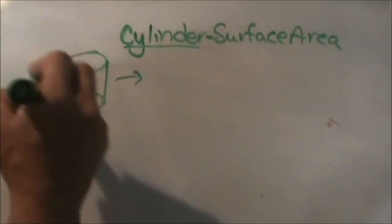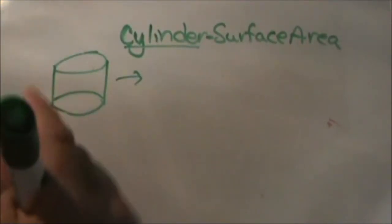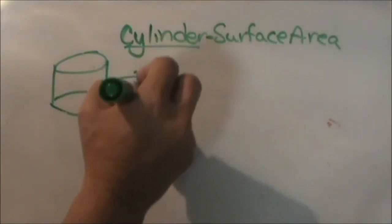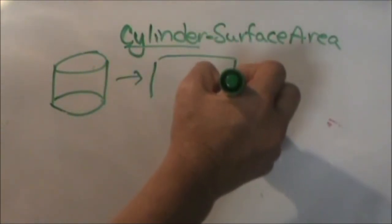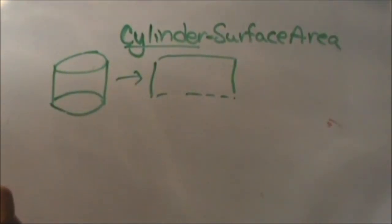We're going to first look at the sides or the soup can. If you were to rip the soup can label off, what would that label look like? Well the label actually opens up to a rectangle. So really all we have to do is find the area of a rectangle, which is just length times width.